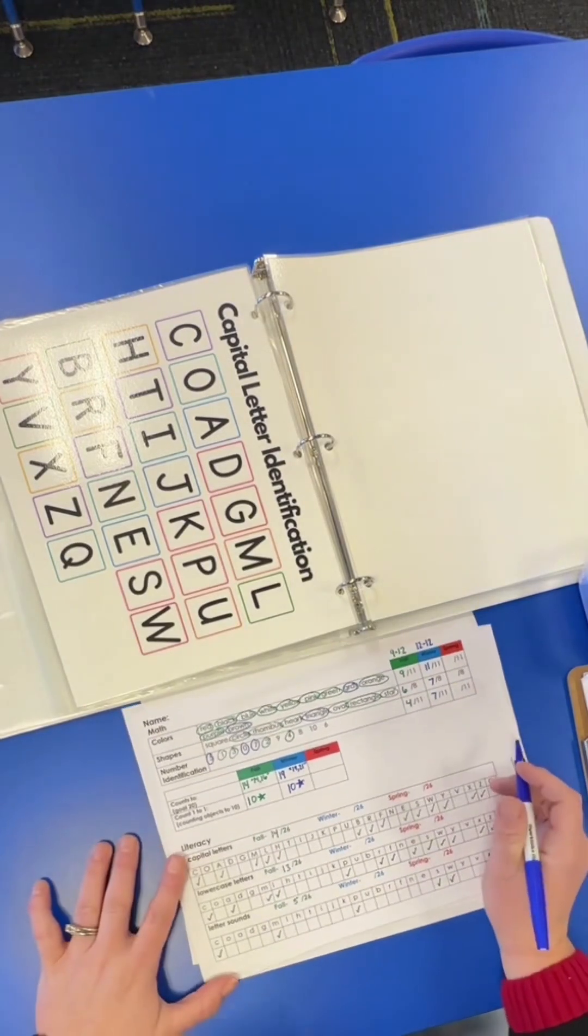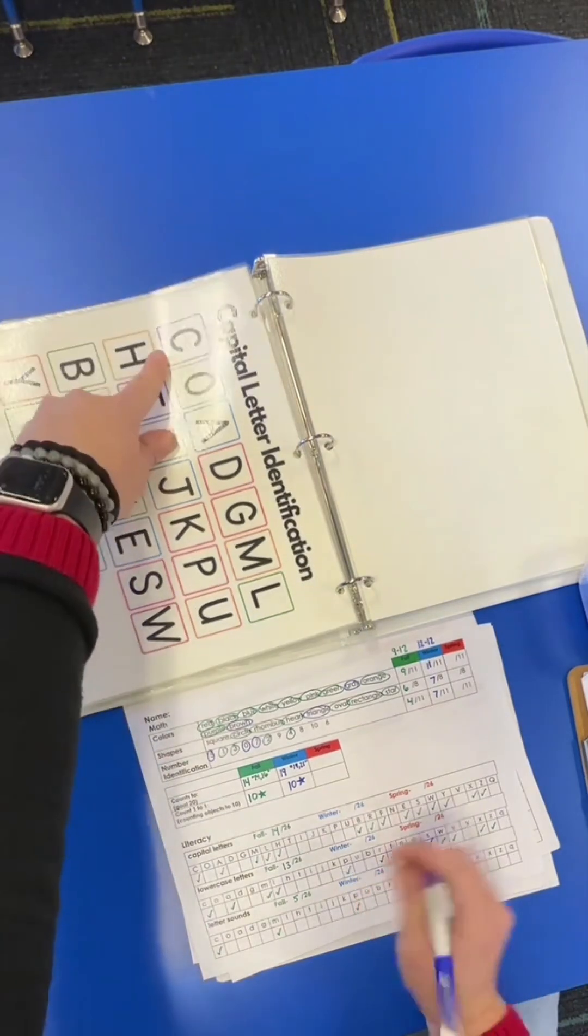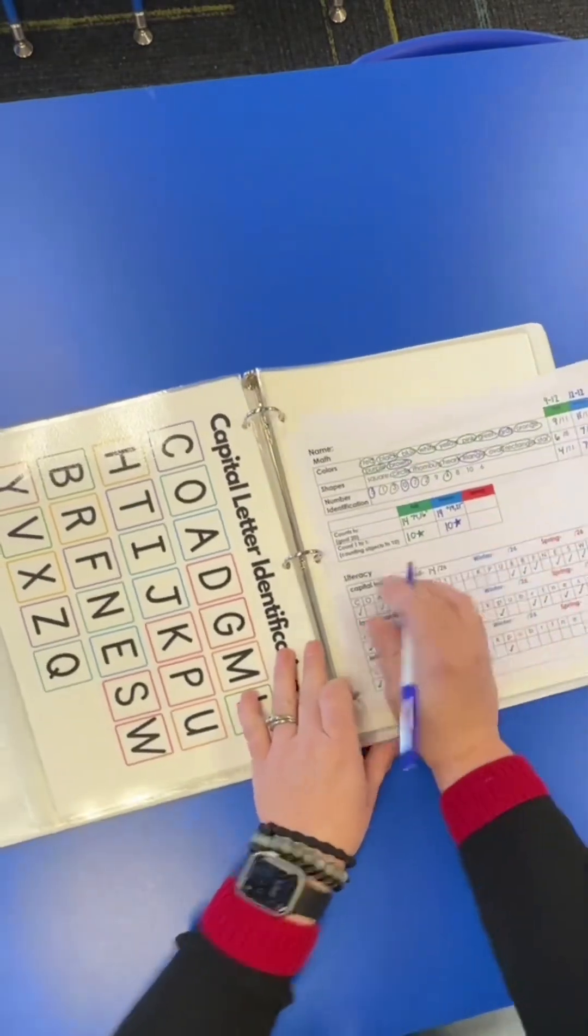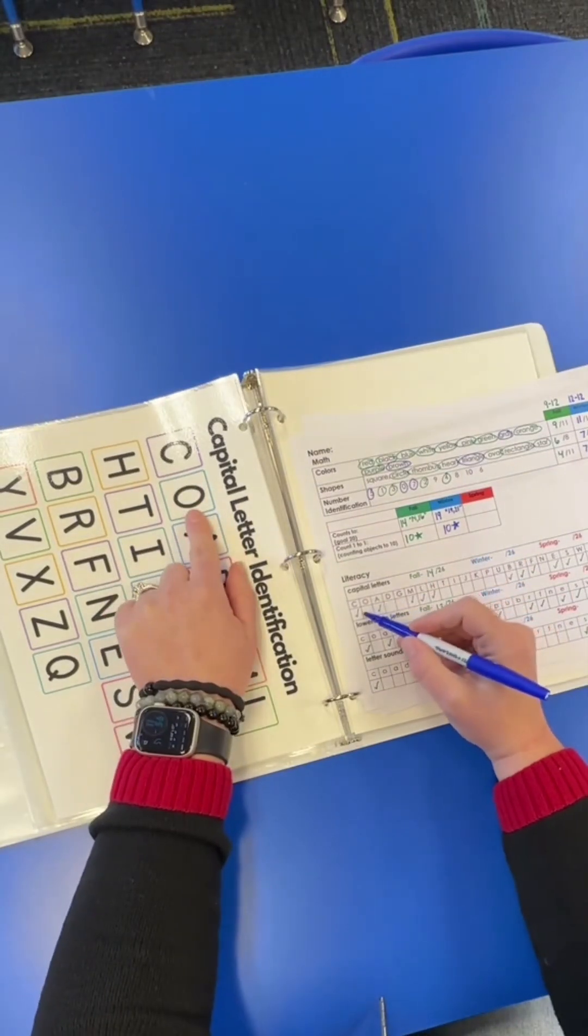Next, for letters, I'm going to point out the letters that the student did not know at the beginning of the year. If they don't know any letters, and you can tell that they don't know any, I will swipe my hand over the page and say, do you see any letters that you know at all?